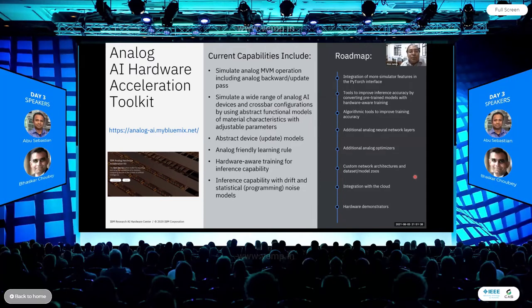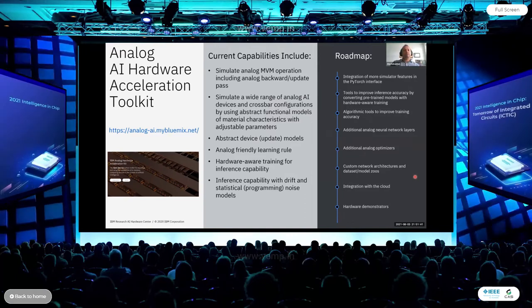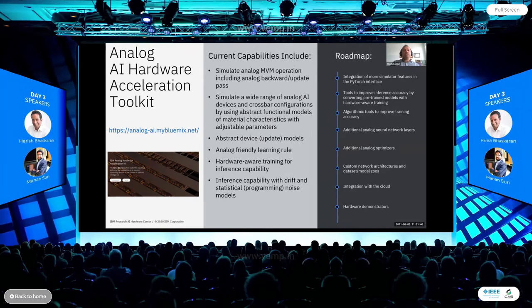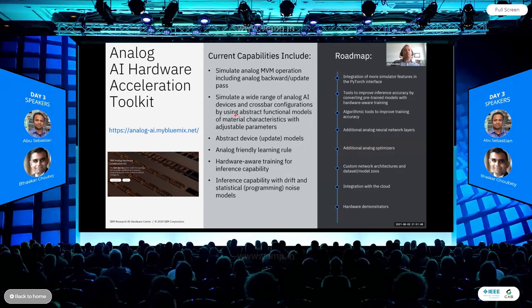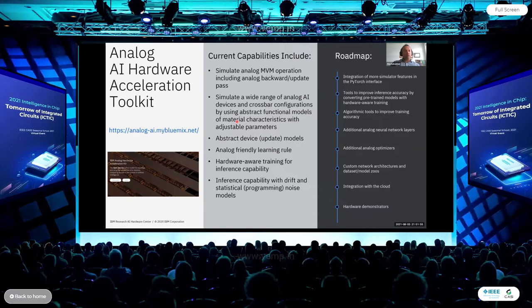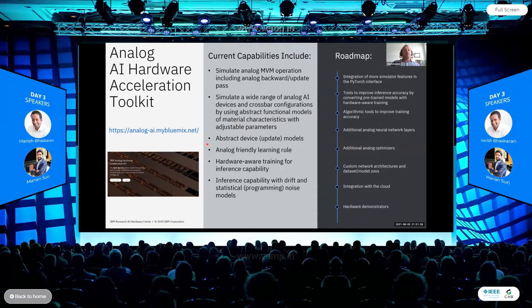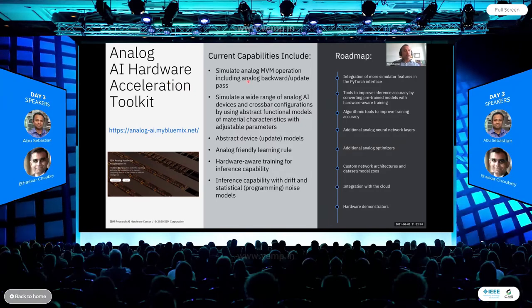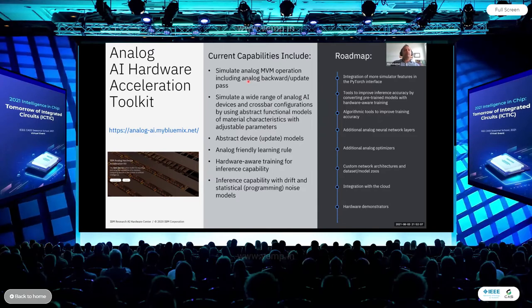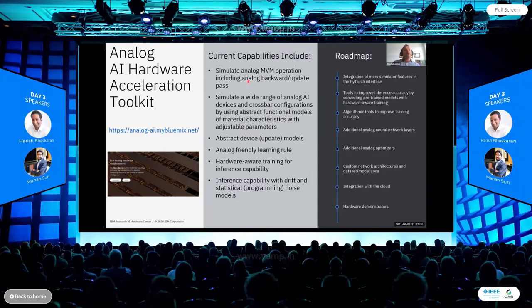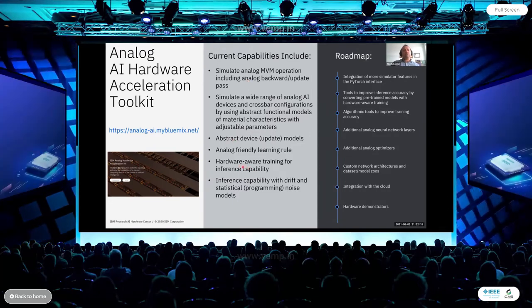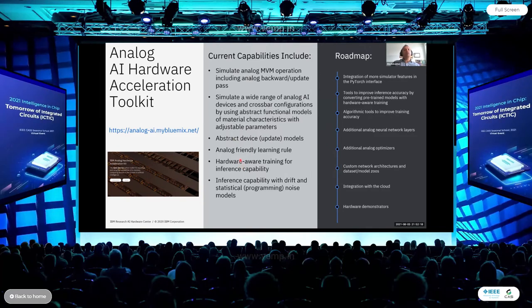Regarding the accuracy of the open-source toolkit relative to actual hardware: in the first version, we have hardware-calibrated models that are open source and people can use them. The plan is to also open up some of the hardware so algorithms can be run on the chip via the cloud. Already, the models are fairly accurate — typically if algorithms work on the models, they work on the hardware as well.